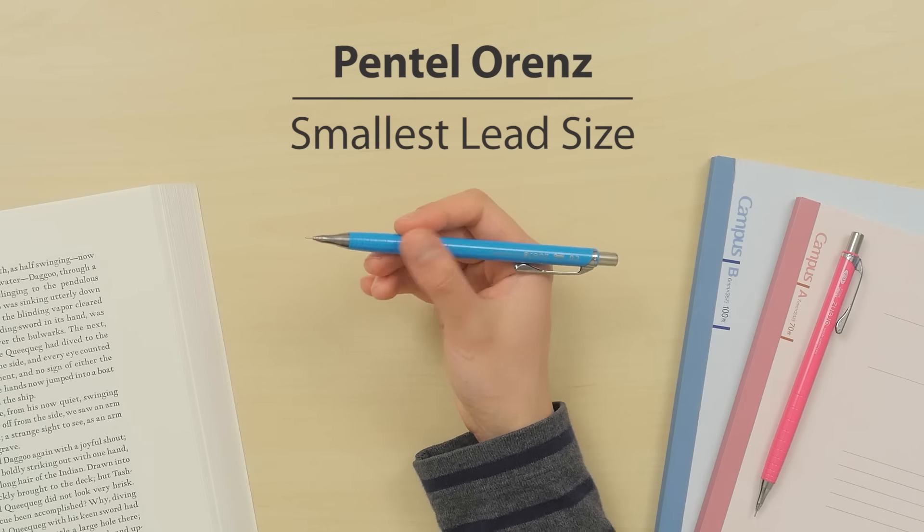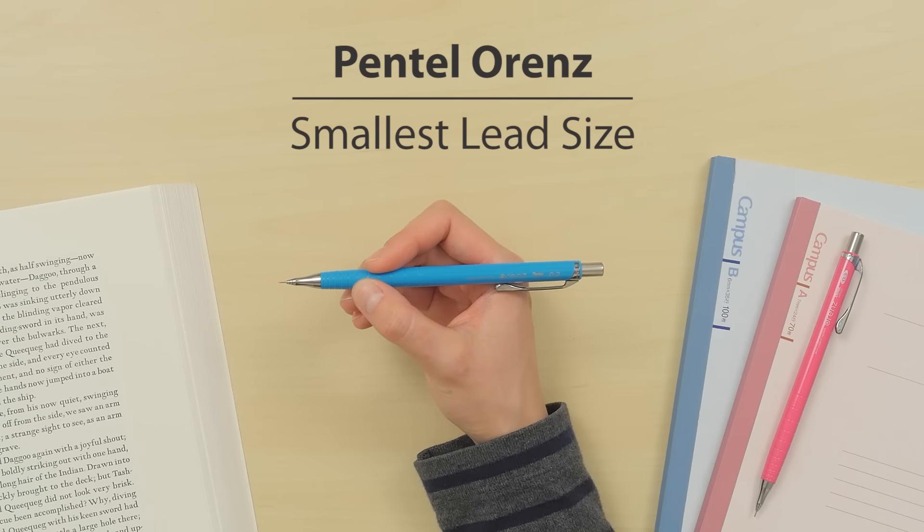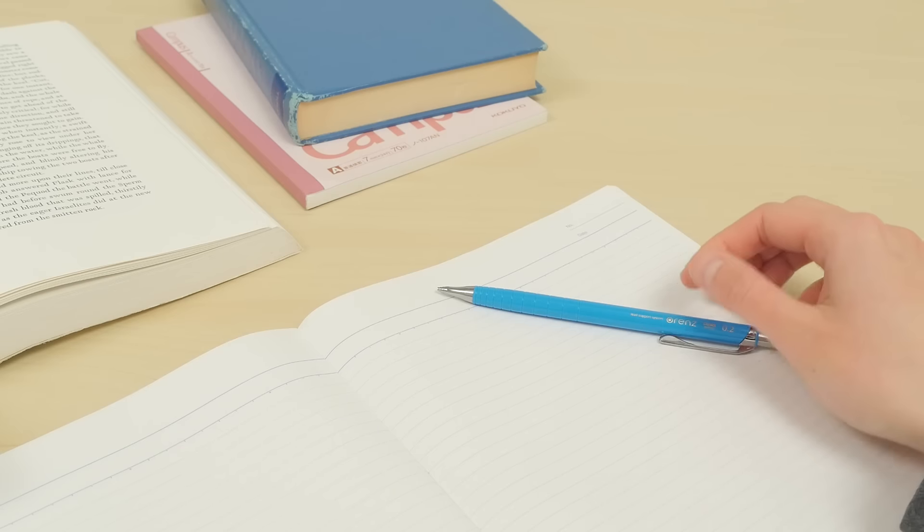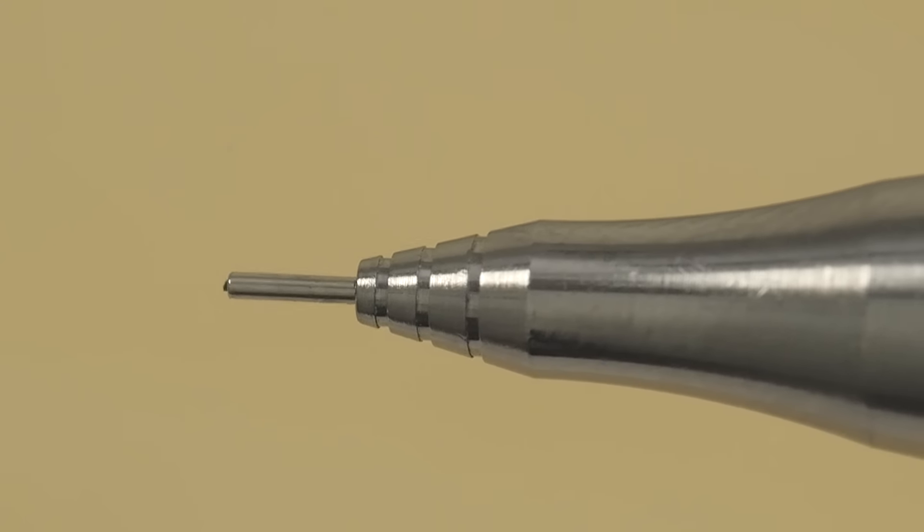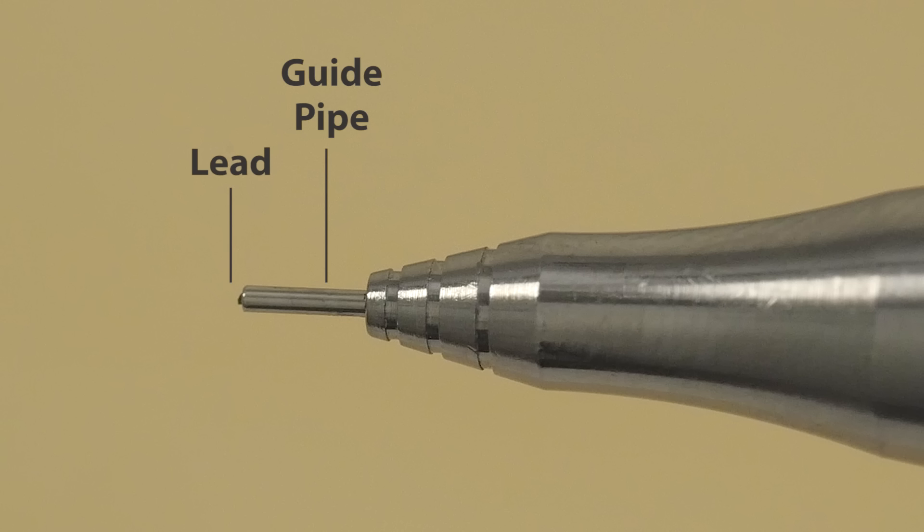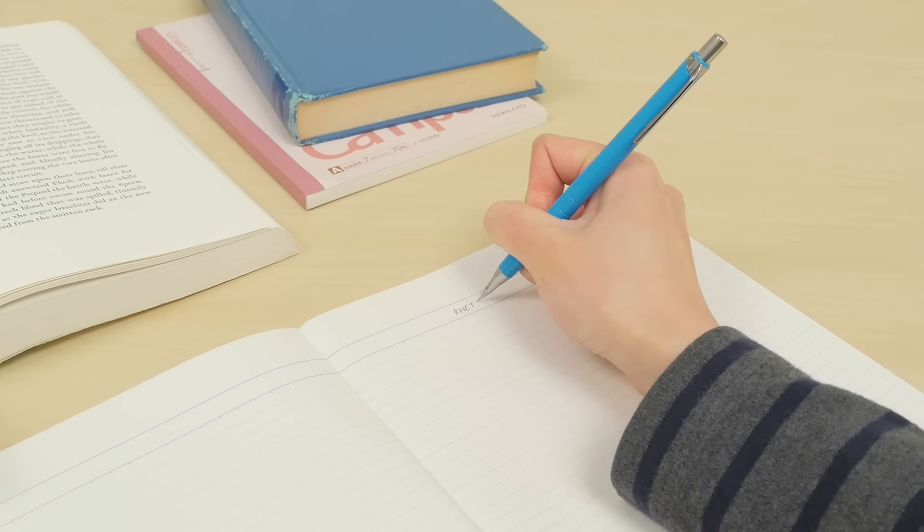Given the delicate size, the lead won't break as you write. It's protected by the built-in guide pipe that encloses the entire length of the lead. The pipe has rounded edges so it won't catch on or scratch the paper as you write.